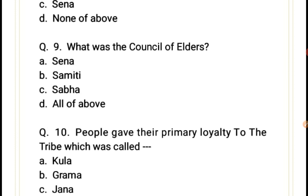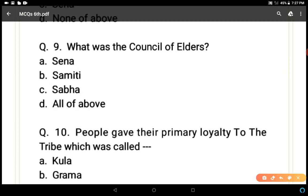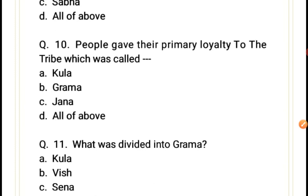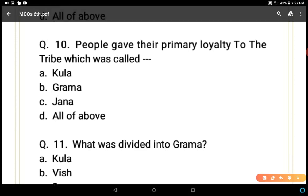Question 9: What was the council of elders? The national assembly was samiti, and sena was the army. So sabha is the correct answer, option C. Sabha was the council of elders.